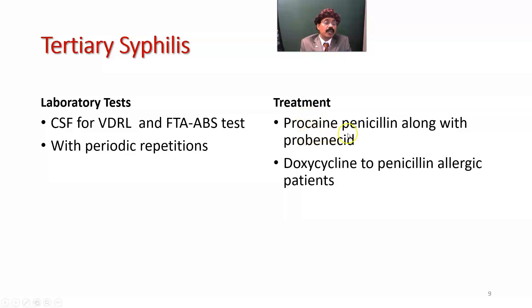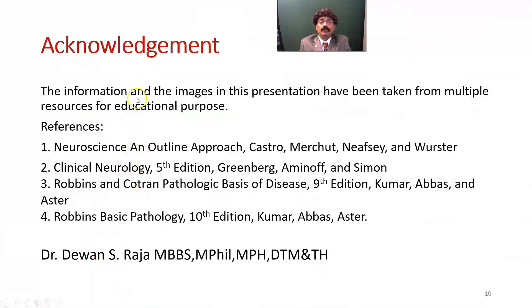Treatment: procaine penicillin along with probenecid — the doses should be determined by the practicing physician. If the person is allergic to penicillin, they can get doxycycline instead. So that's all about tertiary syphilis and its manifestations — neurosyphilis and the Argyll Robertson pupil. If you have any questions, please feel free to ask, and please support my channel. Please subscribe. Have a nice day. Bye.